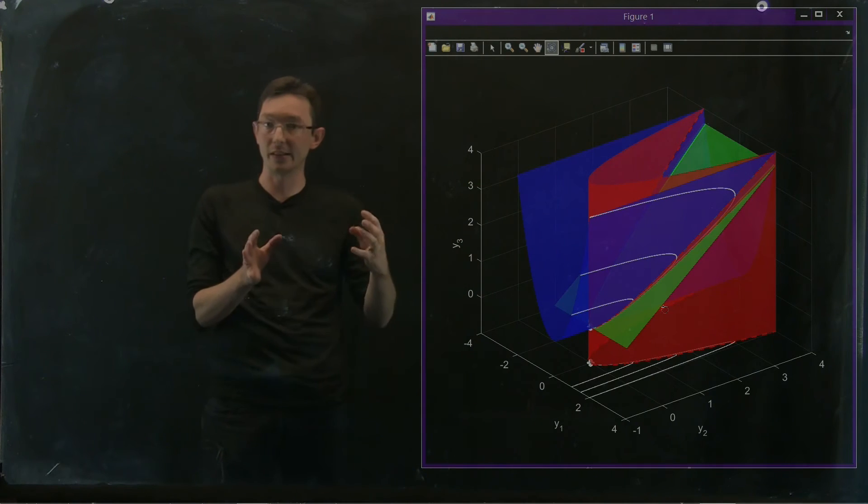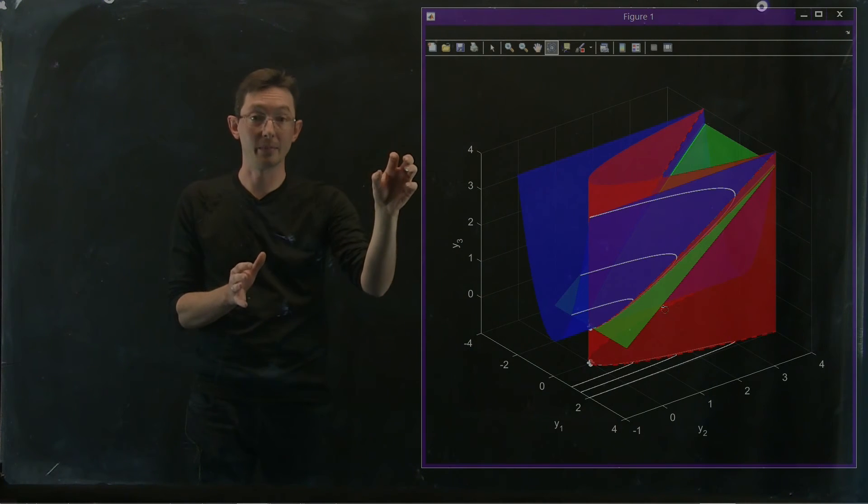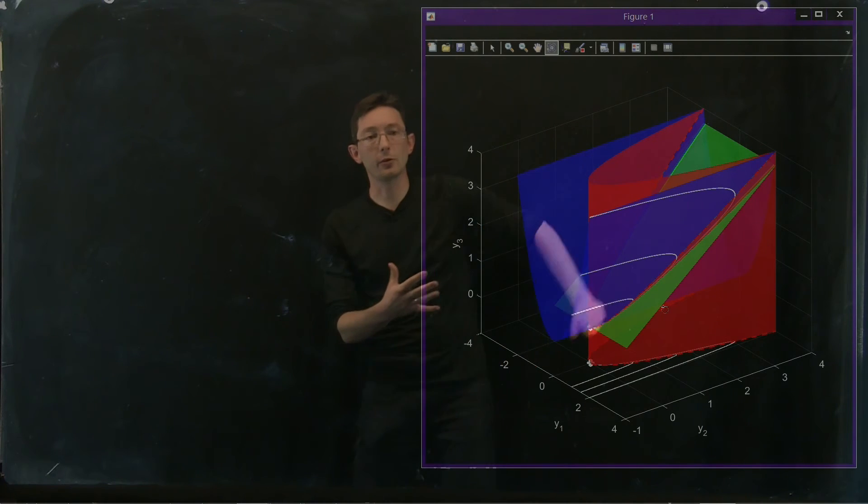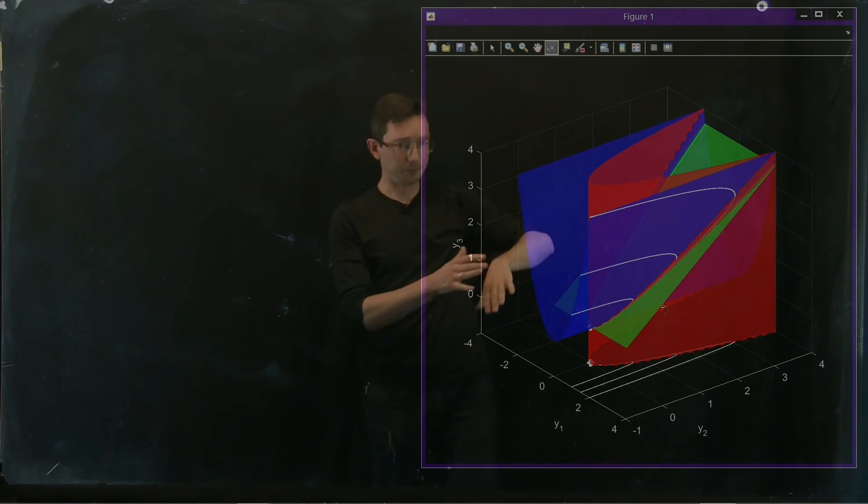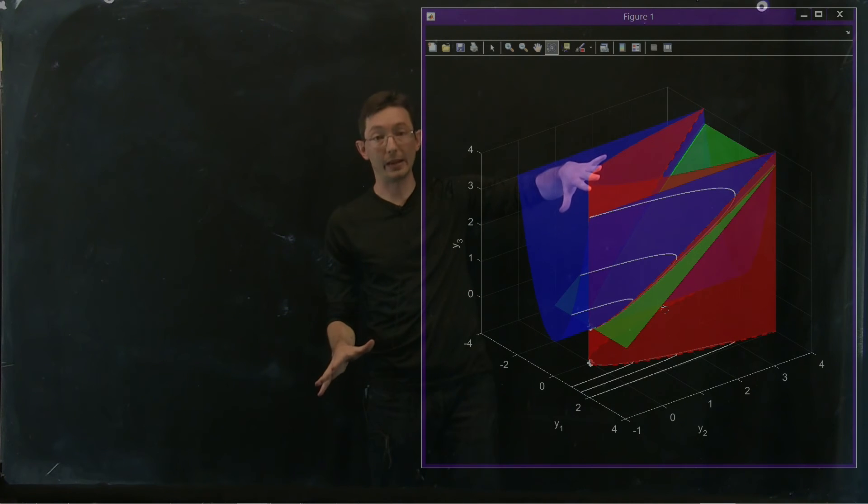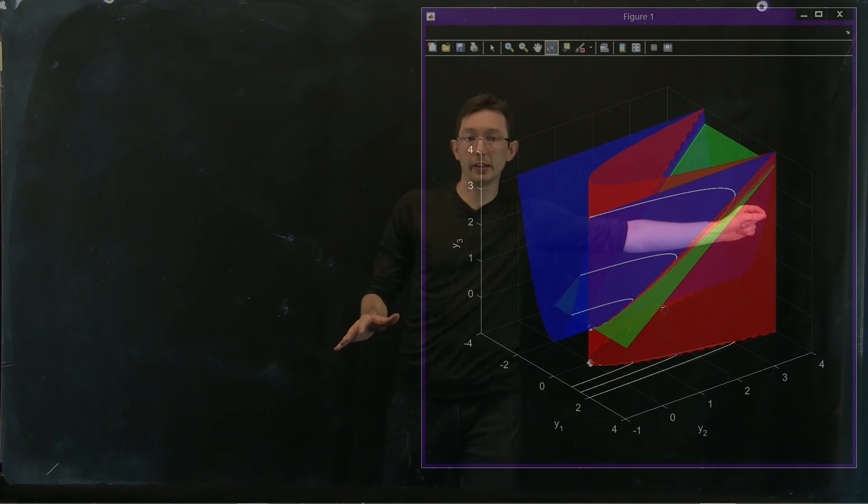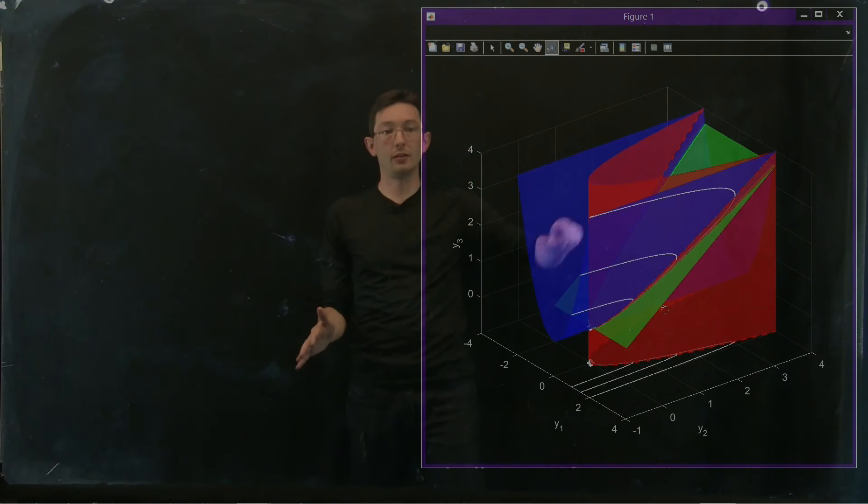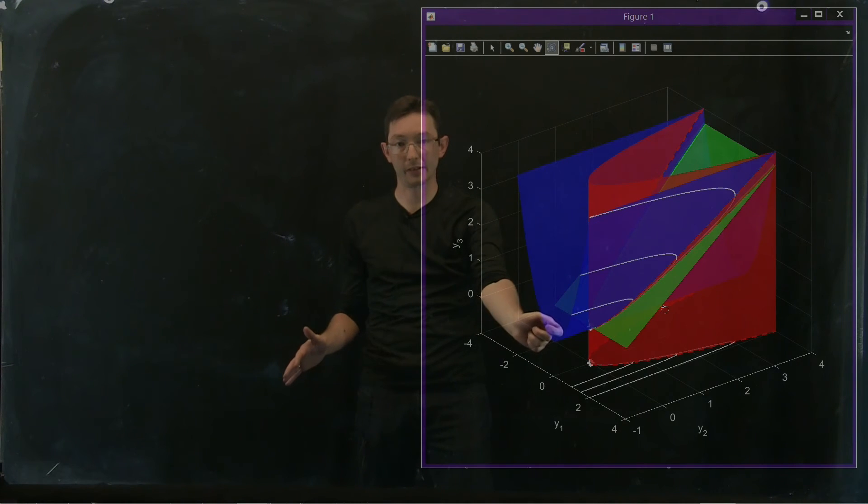So now in the Koopman system, I still have these eigenvalues mu and lambda, and one of them is still much faster than the other. So this green surface here is my slow subspace of the Koopman operator. And these white curves very rapidly attract onto this green slow subspace, and then they follow it back down along this parabolic trajectory to the fixed point.